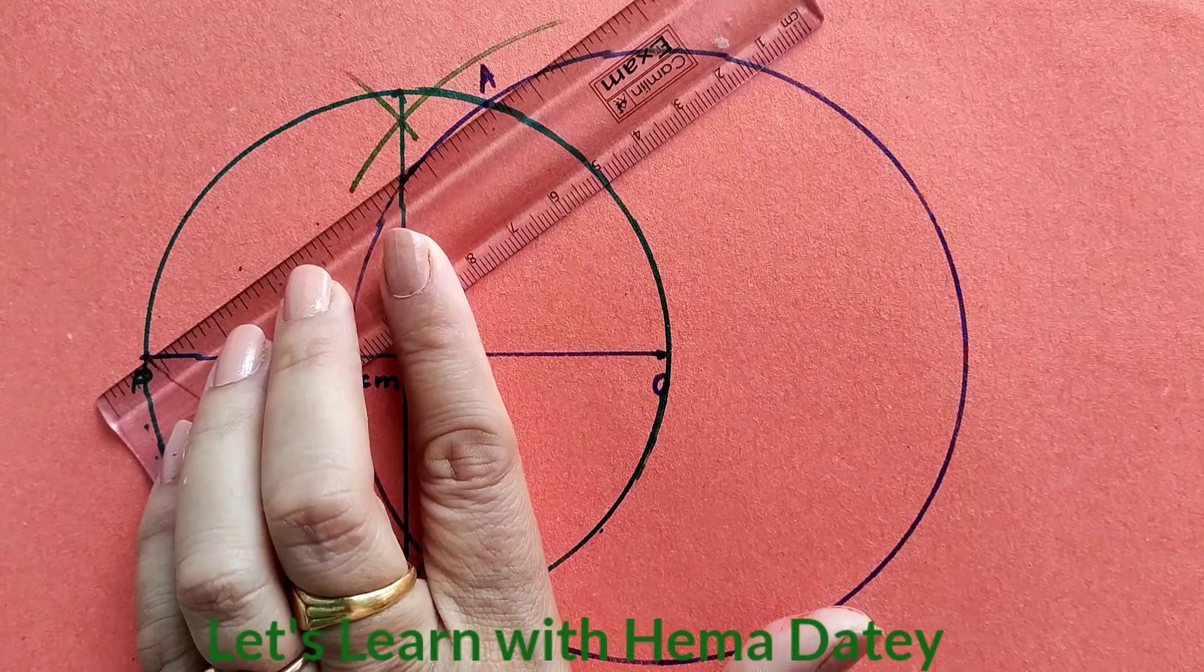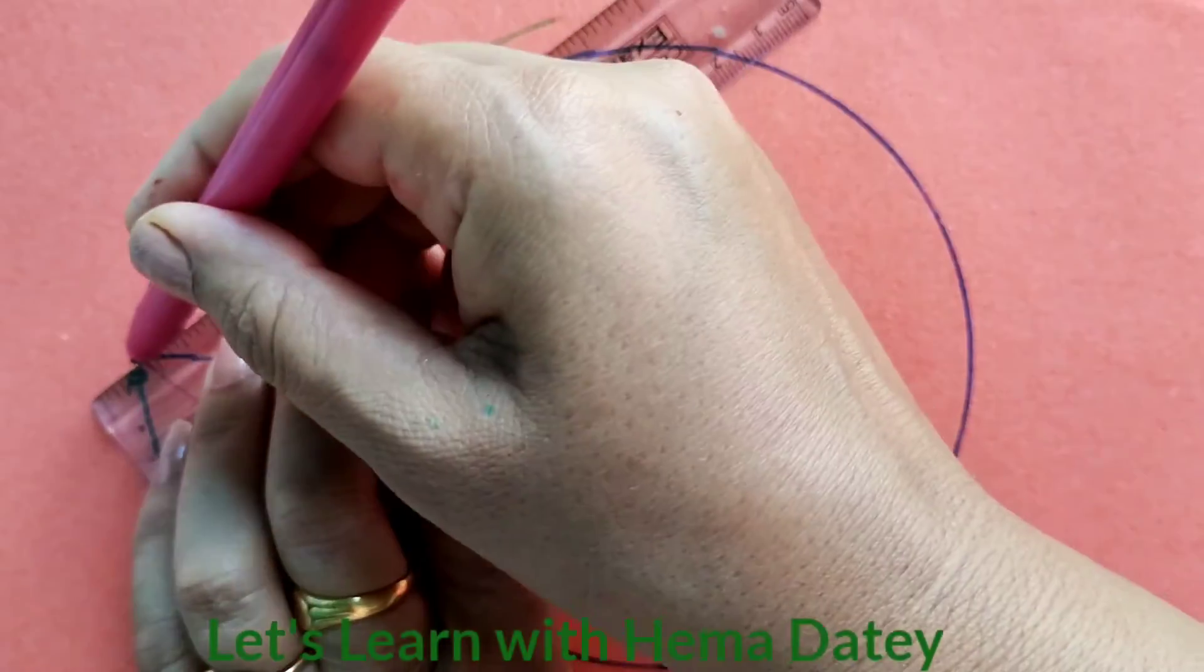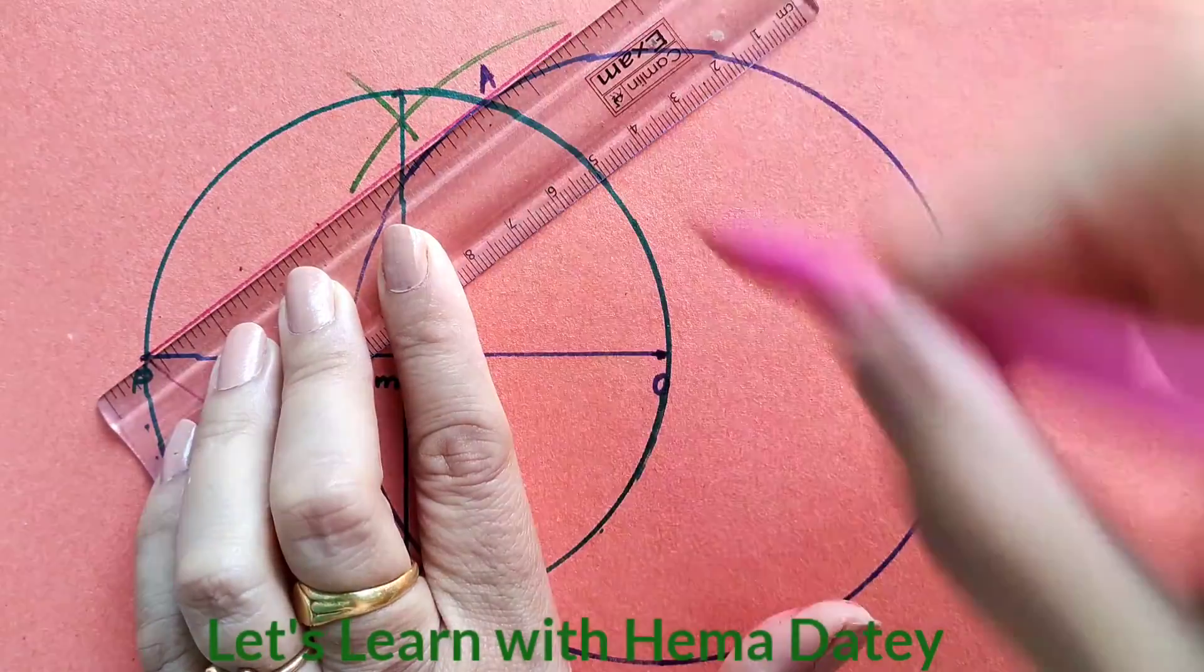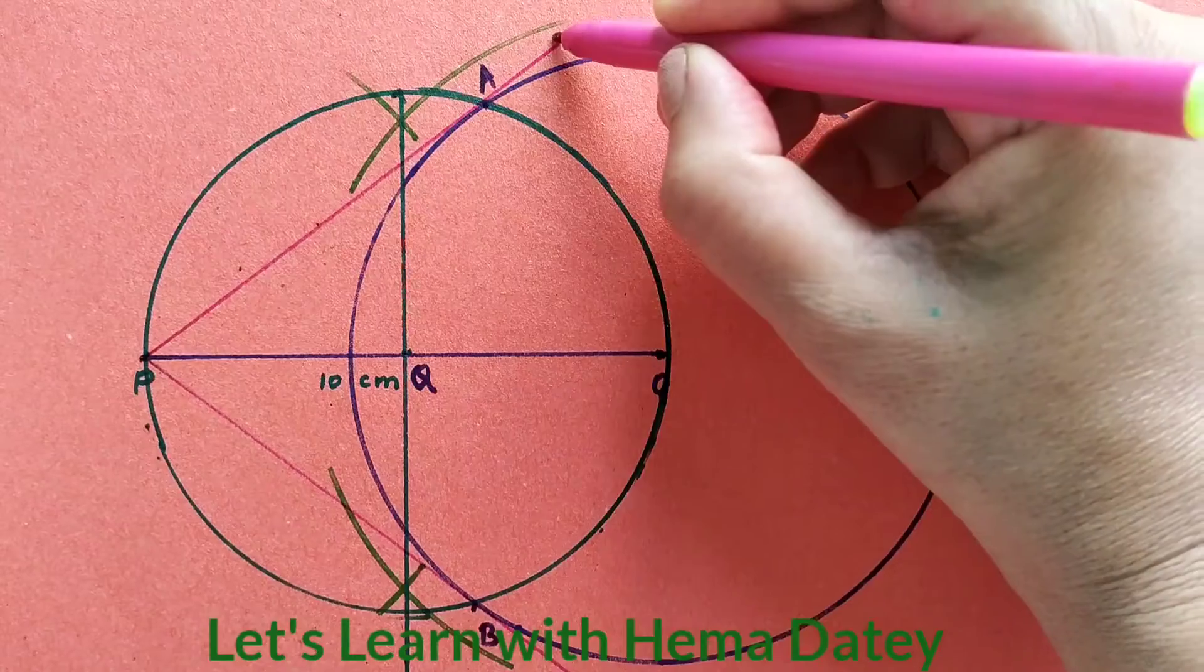Now we join point P with point A and we get a tangent PA. This is the tangent PA.